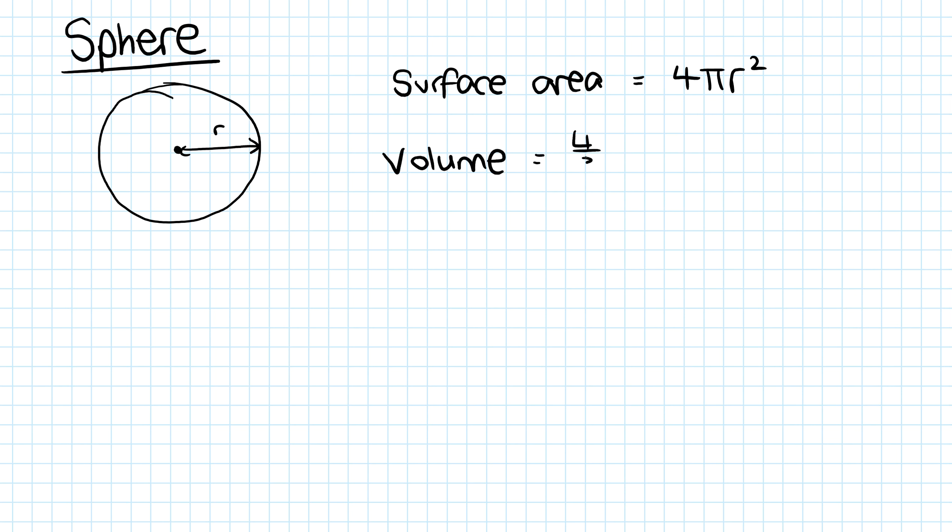For a cone, the other shape we're going to look at - the base radius is r, this height is h, and I'm going to call this length l, which is the slant height.